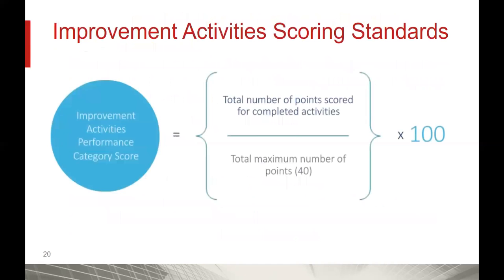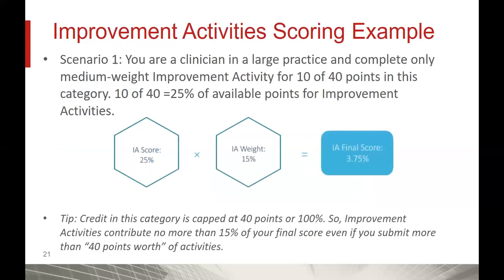Thanks, Lisa. Good morning, everyone. Lisa did a great job explaining how the scoring is done, so we'll just look at some examples. The improvement activity performance score is the total number of points that you achieve by completing the activities, divided by the possible maximum points, then times 100.